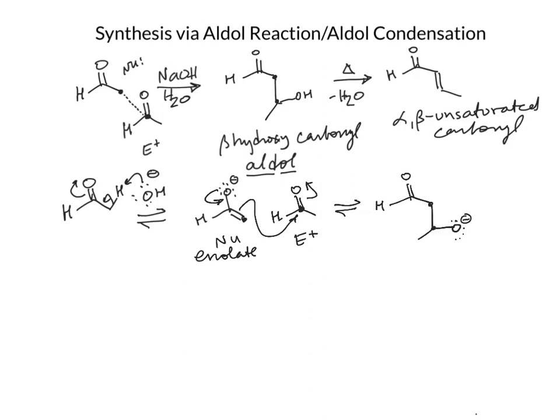And our final step in this mechanism is going to be to protonate. So if we're doing this in a protic solvent, we used hydroxide in the first step, and we're going to form the neutral alcohol product. So we have our beta-hydroxy aldehyde.